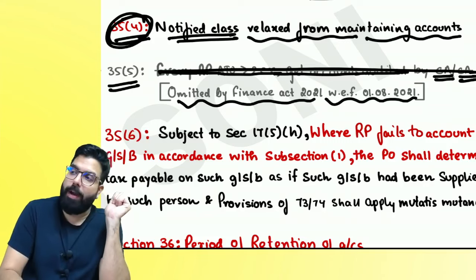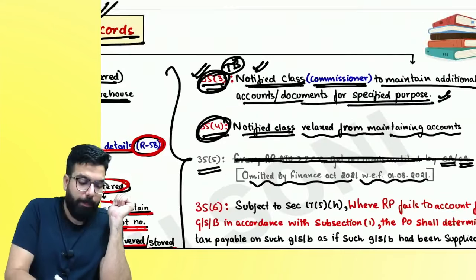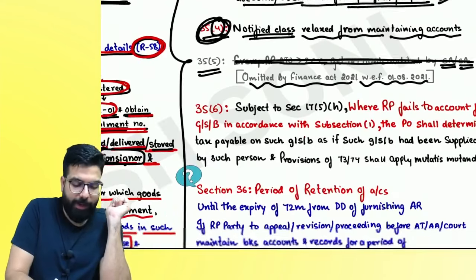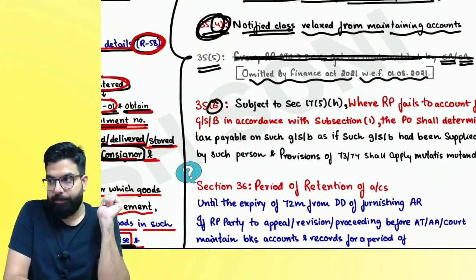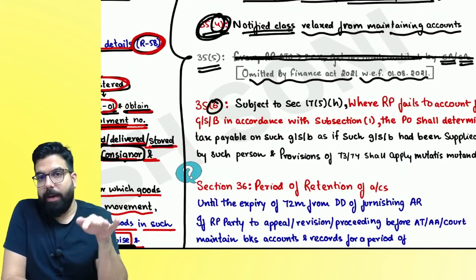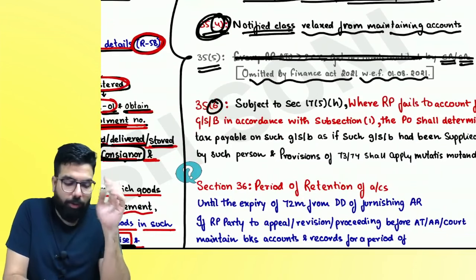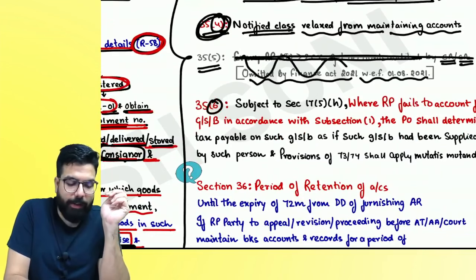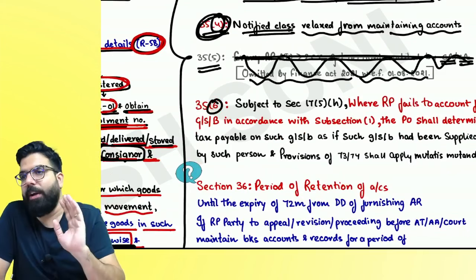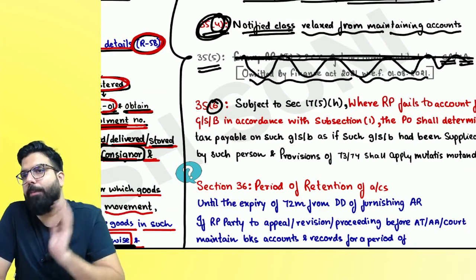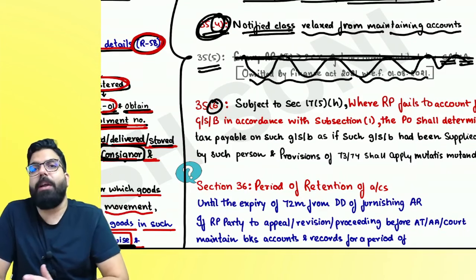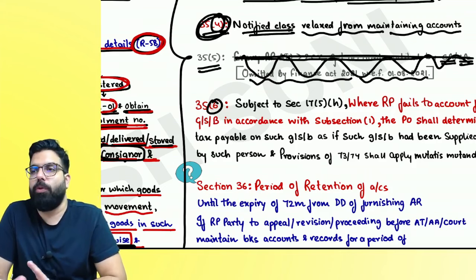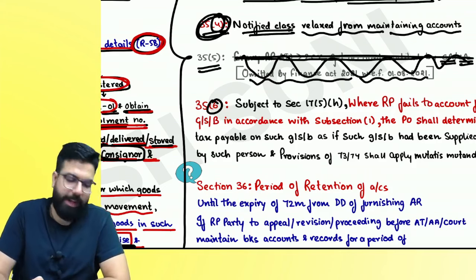I've written Section 35.5 in grey because I skipped from 3 to 6, and you'd wonder where 5 is. So I noted it — audit is no more required. If my turnover is more than 2 crore, do I have to get audit done now? No. Not required anymore.